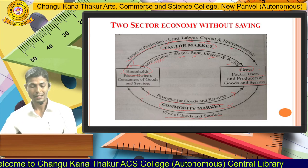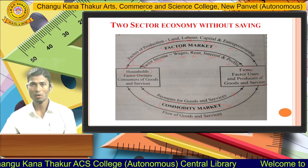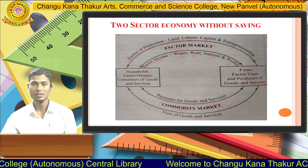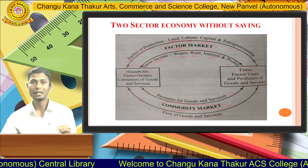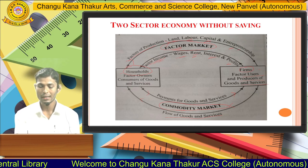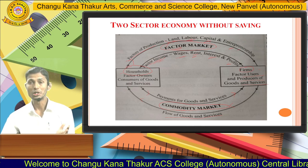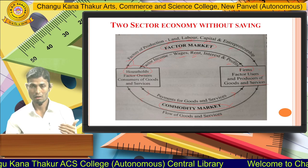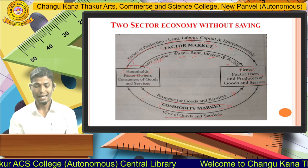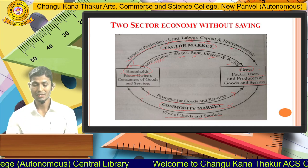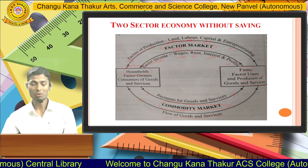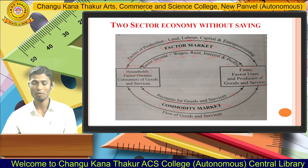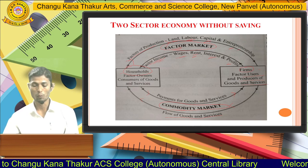In short, in this two sector model of a closed economy without saving, there are two players — households and firms. They exchange factors of production: land, labour, capital, and entrepreneurship. Using those inputs, firms produce various goods and services, which are then sold to the households. This is the mechanism of the two sector economy without saving. Thank you very much.